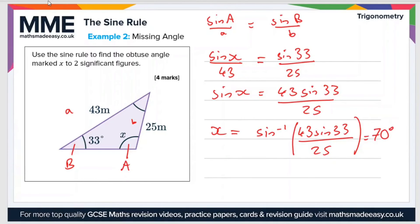But, if we re-read this question, it says use the sine rule to find the obtuse angle, and the angle we found is 70 degrees. 70 degrees is not an obtuse angle. So what's going on?